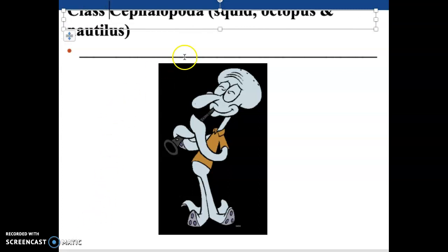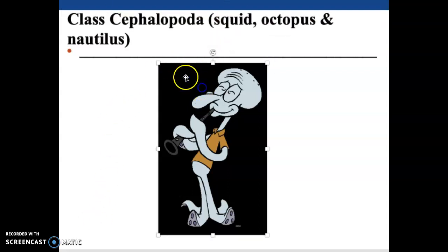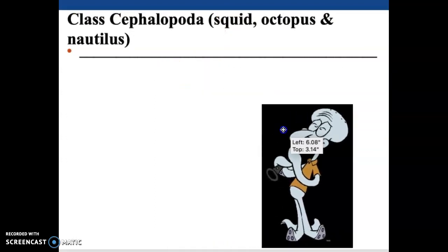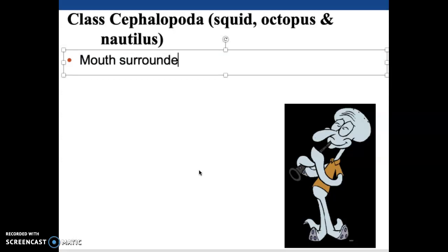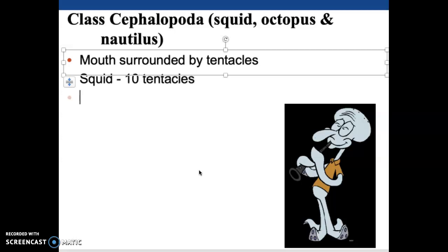On to class Cephalopoda — our fourth and last class to discuss. For Spongebob fans, think of Squidward, but note what's wrong about identifying him as a cephalopod. Key features: the mouth is surrounded by tentacles. Squids have 10 tentacles; octopus — octo — have 8. That's one of the key ways to tell them apart.